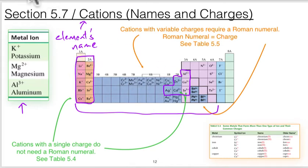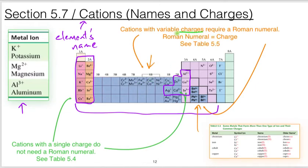The other group — these transition metals, and also some post-transition elements — have a slightly different look. Notice that each one of those can have more than one type of charge. When you're dealing with these transition elements that can vary in charge, we are going to add a little bit of extra information to the name.